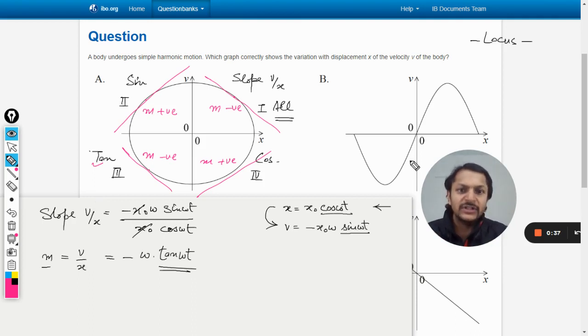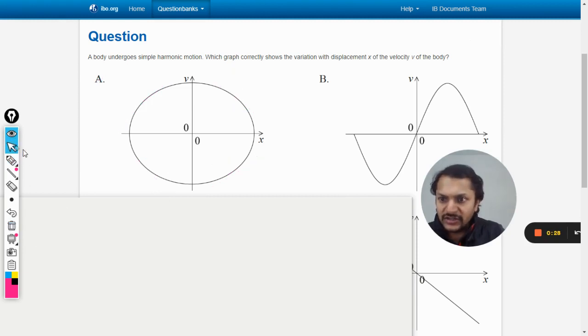This is possible only in this option. Other options are not possible. So this is not possible, this is not possible, and that is also not possible. So A is the correct option. Let us verify it from the mark scheme as well as the other graphs.